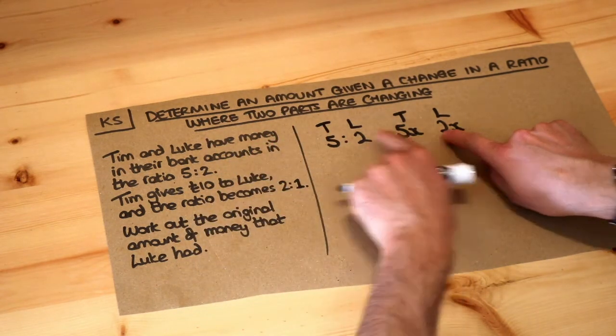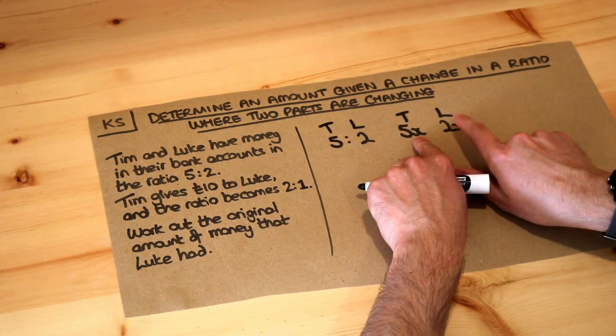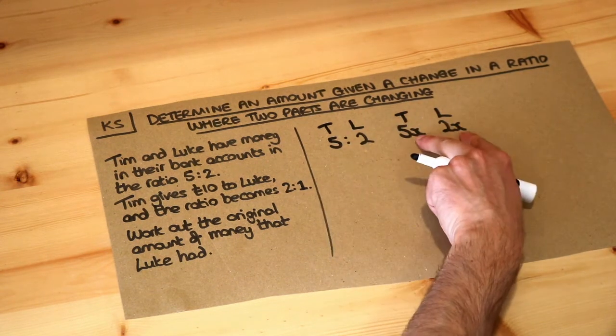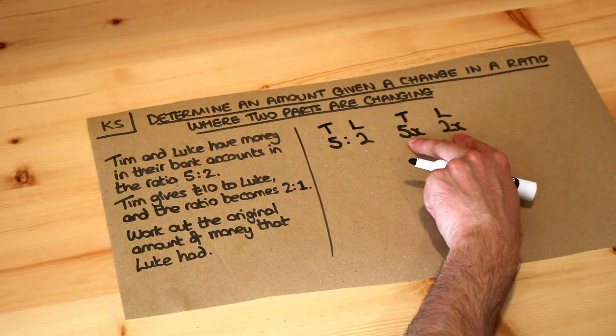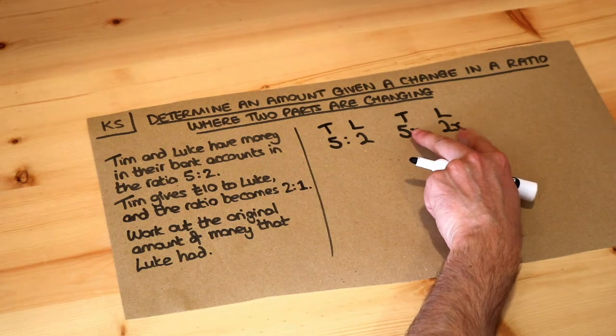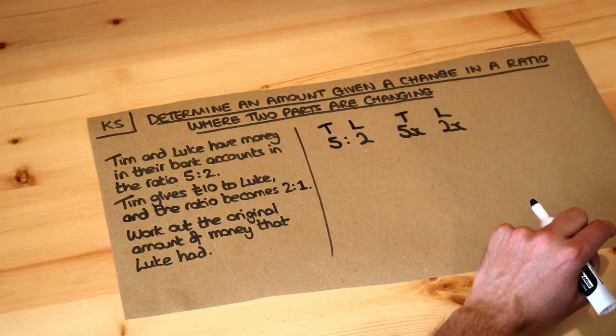So by multiplying each of the 5 and 2 by x they're still going to be in the ratio 5 to 2 because you're multiplying both these numbers by the same amount. But you're allowing it to represent any two possible amounts in the ratio 5 to 2.